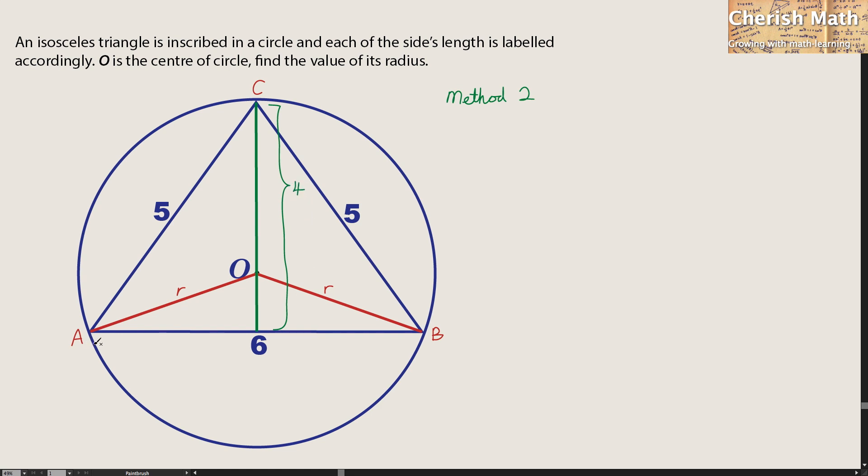The value here is 4. And how I get 4, I'm getting it from this part, which is 3. By using 6 divided by 2, I got 3. And here is 4, simply because I'm going to use the Pythagorean theorem.